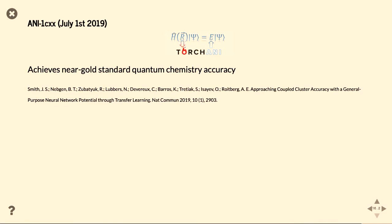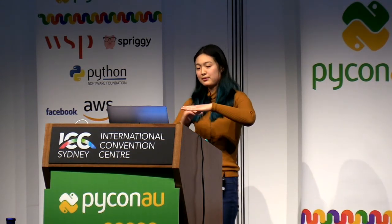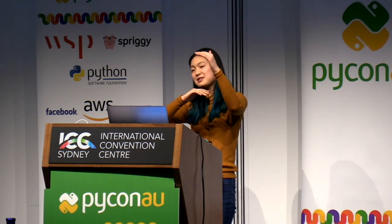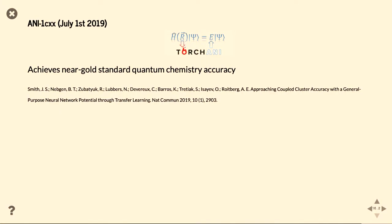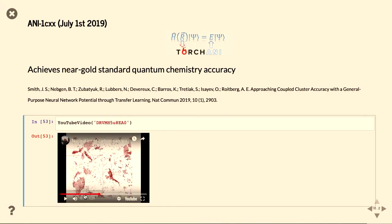And most recently, on July 1st, there was a neural network published that achieves near-gold standard quantum chemistry accuracy. So, if you remember at the start, I was talking about quantum chemistry and how we can't get anywhere near that, so we just approximate it with molecular dynamics. This is like going two steps up. Quantum chemistry is better than molecular dynamics in terms of accuracy, and then we're going to near-gold standard of that. So, that's a massive jump up in accuracy.